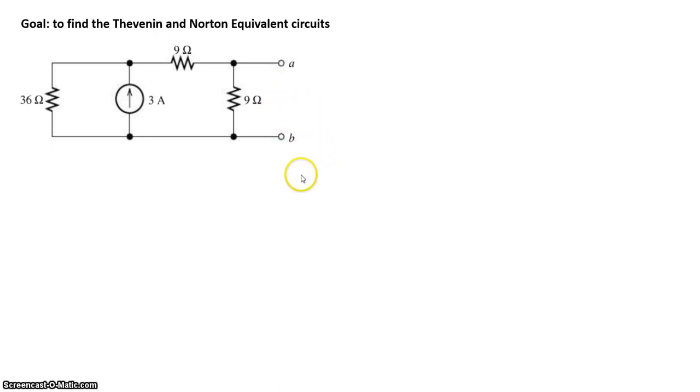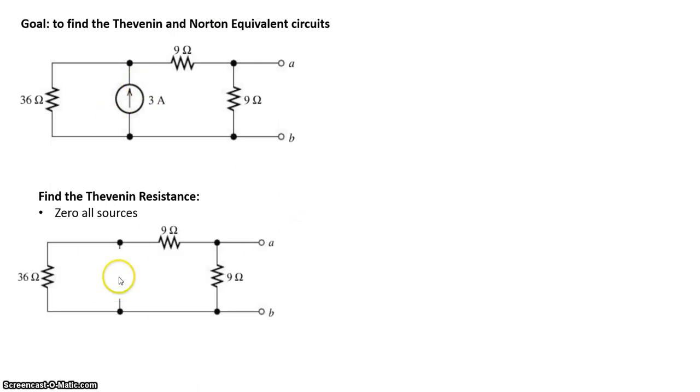First step, let's find the Thevenin resistance. To find the Thevenin resistance, the goal is to zero out all sources. What does that mean for a current source to be zero? A current source of zero basically means there's no current flowing through it, indicating an open circuit. So wherever we have the current source, we can replace that with an open circuit like this.